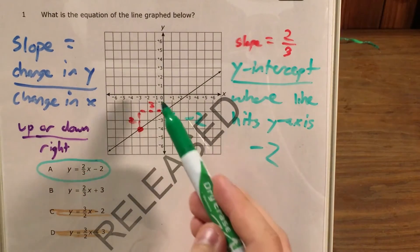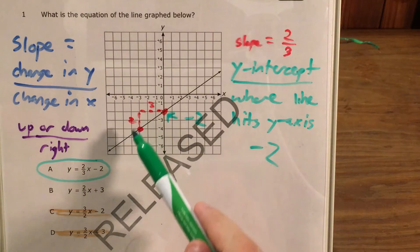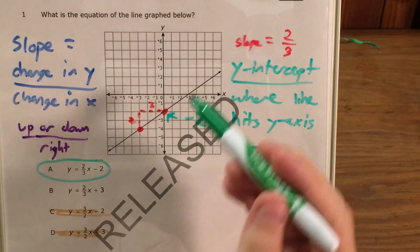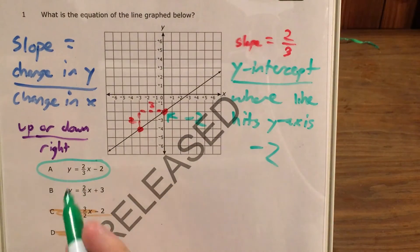So that's how we go from graph language to function language by finding our slope, counting how far up or down we're going and how far right we're going, and finding our y-intercept where this line that we're graphing hits the y-axis.